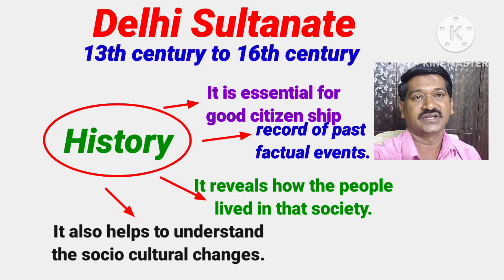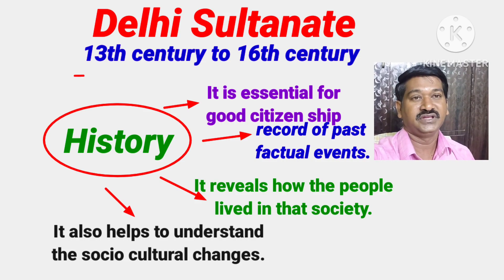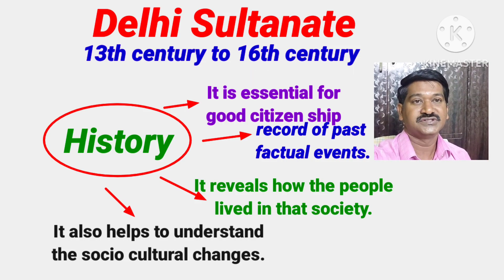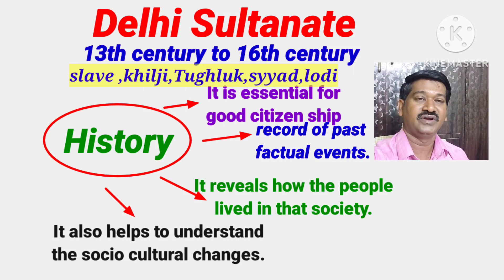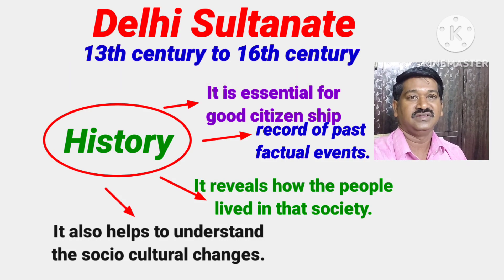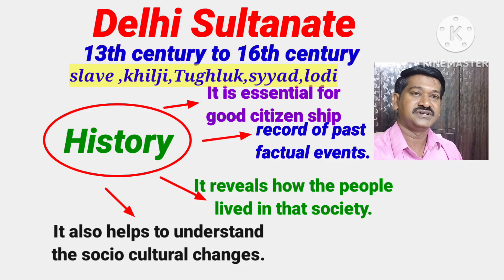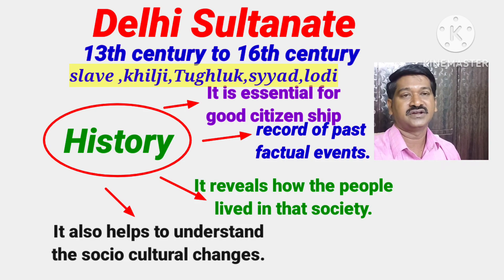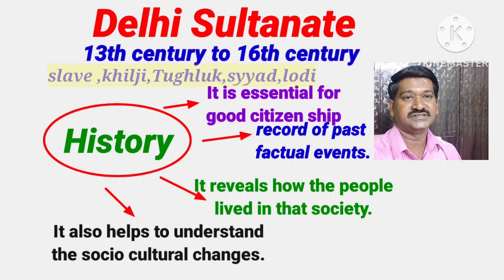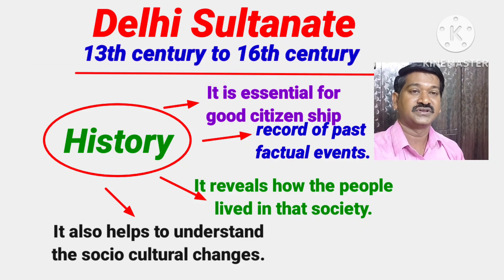Today I am going to discuss about the 7th Class World Studies Delhi Sultanates. Delhi Sultanates, they ruled India from 13th century to 16th century. In Delhi Sultanate, there are mainly five dynasties. These five dynasties are: the first is the Slave dynasty, the second is the Khalji dynasty, the third is the Tughlaq dynasty, the fourth is the Sayyid dynasty, and the fifth is the Lodi dynasty. These five dynasties ruled India from 13th century to 16th century.